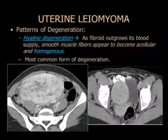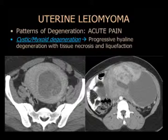Hay que conocer el aspecto normal de los fibromas uterinos y el tema de la degeneración. La degeneración hialina es la forma más común: se observan zonas que se licúan dentro del fibroma, con zonas lineales circundando áreas de disminución de atenuación tipo fluido. Cuando hay más licuefacción, empezamos a ver degeneración quística o mixoide. Estos son los que llegan a urgencias con dolor abdominal agudo. Si ven algo claramente quístico sin otra fuente de dolor, hay que informar fibroma degenerado con degeneración mixoide como posible fuente del dolor pelviano agudo.